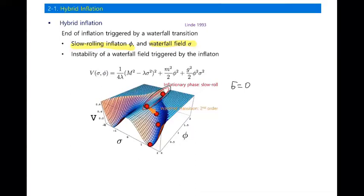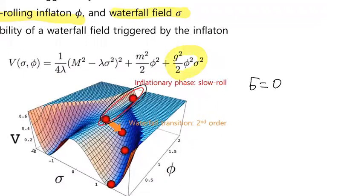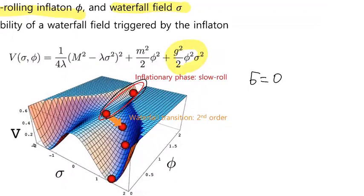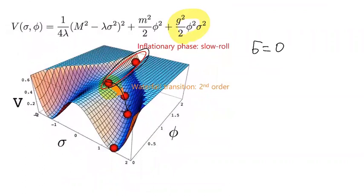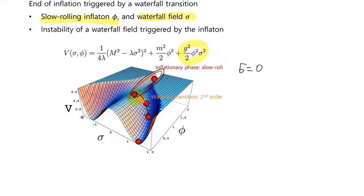During inflation, the waterfall field is fixed at the origin due to a large mass from the inflaton field value. The waterfall field obtains mass from the inflaton field value, so it is very heavy during inflation, but at some point it becomes tachyonic — a tachyonic transition occurs. The slow-roll conditions are then broken and inflation is terminated almost instantly.